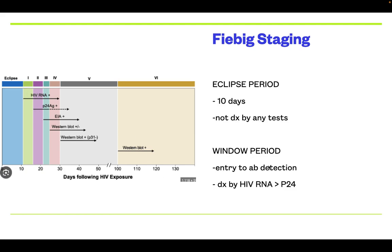The second is the window period — the period from viral entry to antibody detection. The antibodies are detected from stage 3, around 22 days. We can detect HIV in the window period by two tests: HIV RNA and P24 antigen. HIV RNA becomes positive around the 10th day, P24 antigen becomes positive around 15 days, and antibodies start appearing around 22 days, becoming positive in 99% of people by the end of 6 weeks. So, for the window period, the best test is HIV RNA followed by P24 antigen.